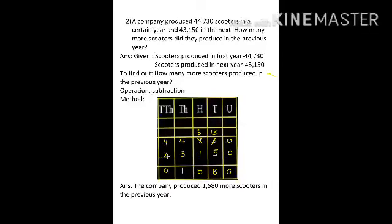Now start writing the second question from the textbook. A company produced 44,730 scooters in a certain year and 43,150 in the next. How many more scooters did they produce in the previous year? First year they produced 44,730 scooters and in the next year 43,150 — so the first year was more and the second year was less. Write down given: scooters produced in the first year is 44,730, scooters produced in the next year is 43,150. Operation: subtraction. So 44,730 minus 43,150.